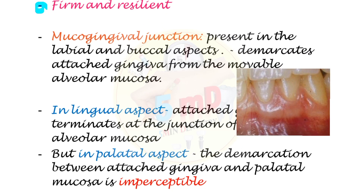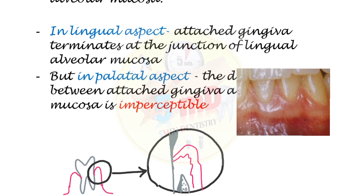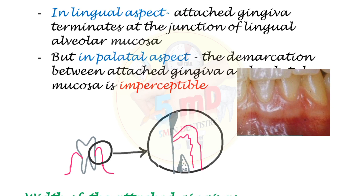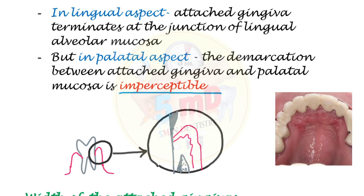The mucogingival junction demarcates the attached gingiva from the movable alveolar mucosa. It is especially notable in the facial aspects — that is, the labial and buccal aspects. In the lingual aspect, the demarcation between attached gingiva and lingual alveolar mucosa is also noticeable. However, in the palatal aspect, the demarcation is imperceptible, because the palatal mucosa is also firm and resilient and not mobile, unlike the lingual or labial mucosa.